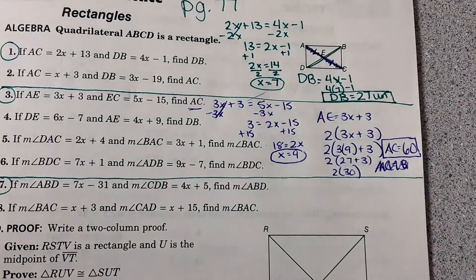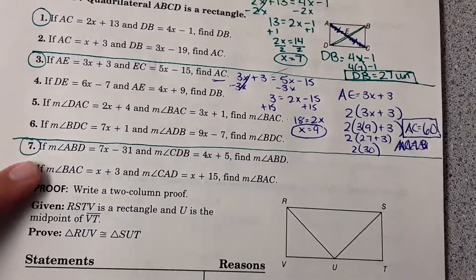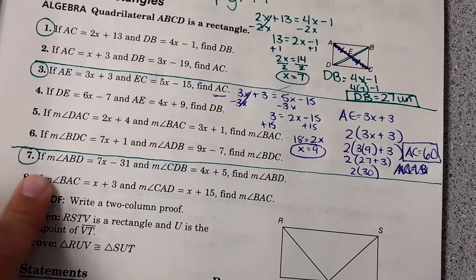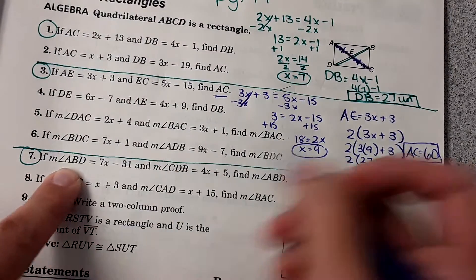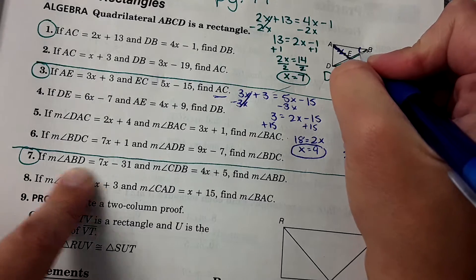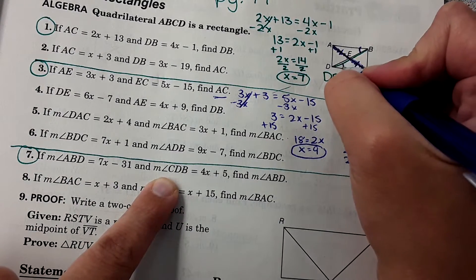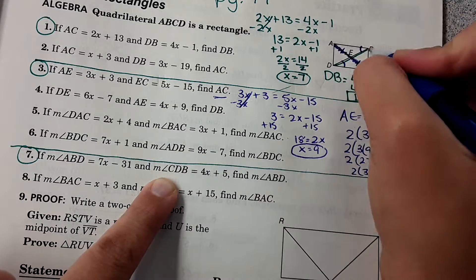Okay. Now, moving to number 7. We're talking about angle measures now. It says, if the measure of ABD, this angle here, is this expression. And the measure of CDB, this angle here, find the measure of ABD. So they give us expressions for both.